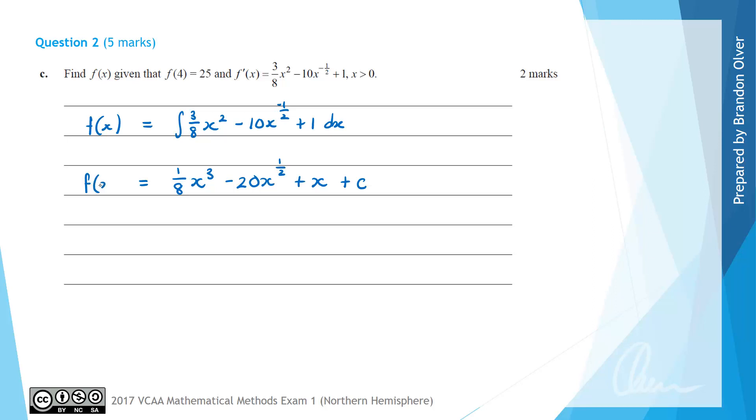That is an expression for f of x. Now we need to use the information that when x is 4, f of x is 25. So we're going to substitute 4 in for x and we get 1 on 8 multiplied by 4 cubed. Then we get minus 20 and x to the power of 1 half is the same as the square root of x so we're going to have 20 times the square root of 4 plus 4 plus c and we know that equals 25.